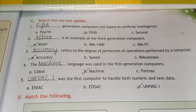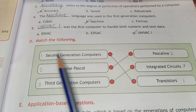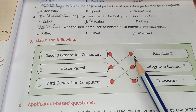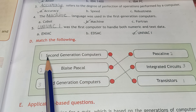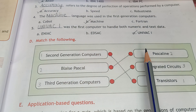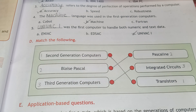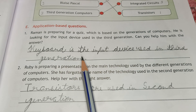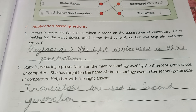Next is the Match the Following section. Click on your book. If you have read this lesson, you will not have a problem. I have the numbering here: first, second, third. The keyboard is the input device used in the third generation. This is the second answer as well.